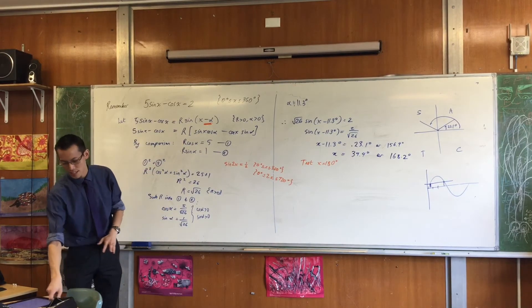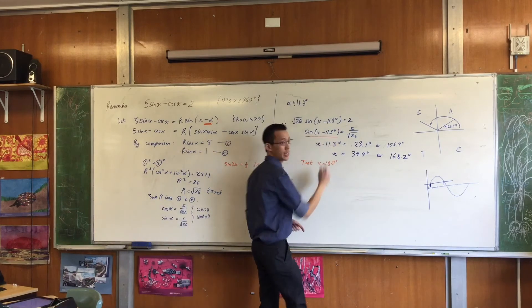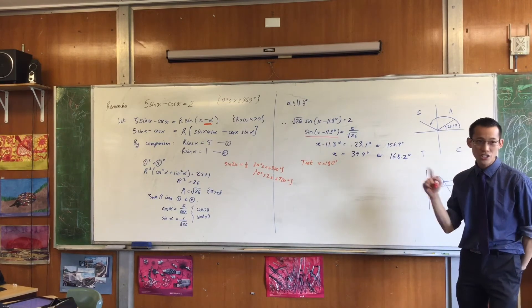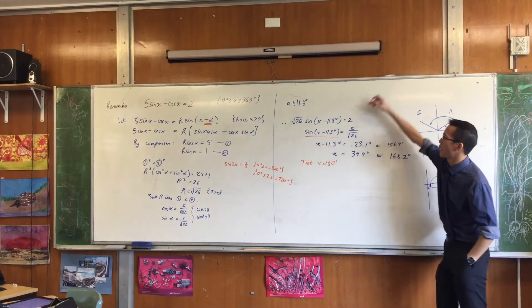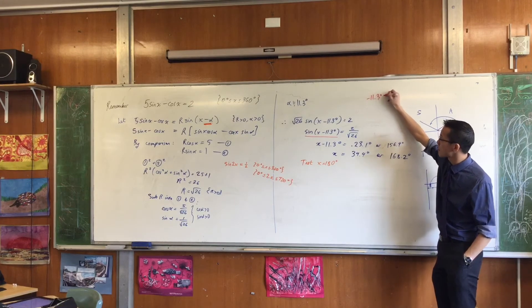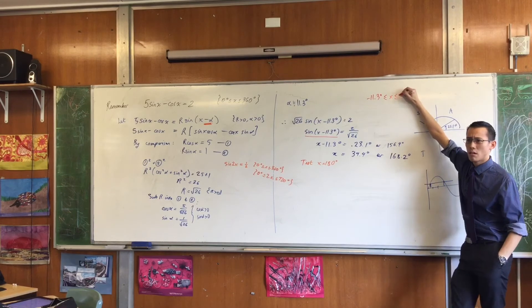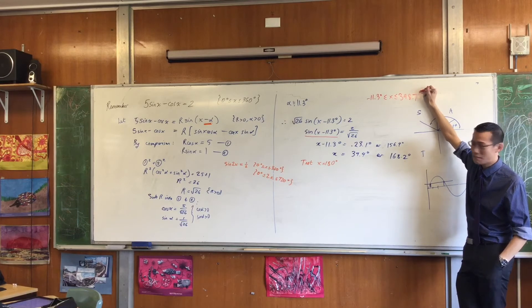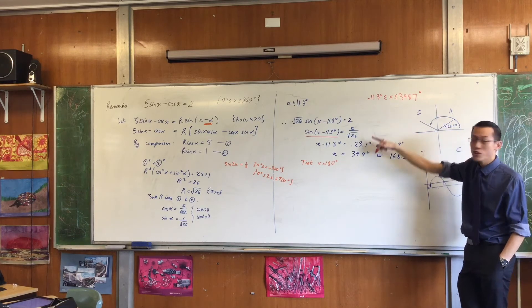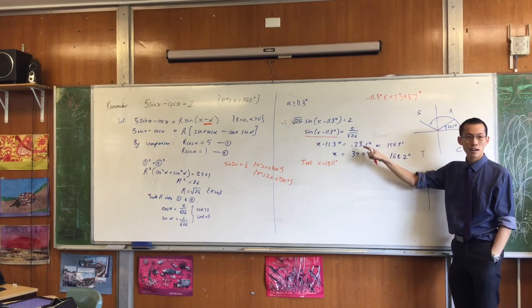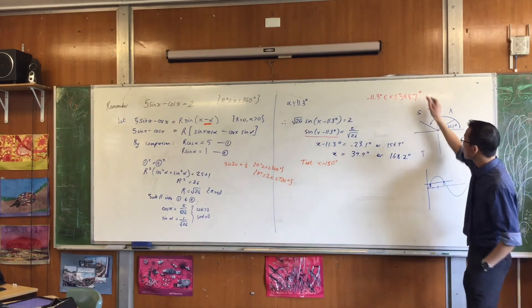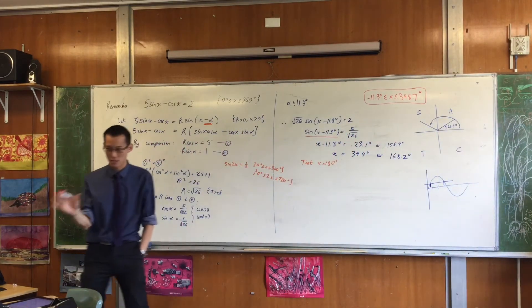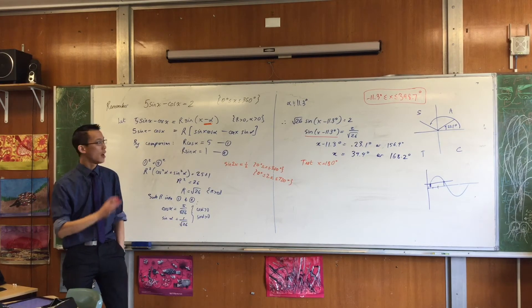Now the phase introduces this issue, right? I'm no longer really solving from 0 to 360. I'm actually solving from -11.3 degrees to 348.7 degrees. So when you go and find your solutions, see these guys here, you're not thinking about, are they between 0 and 360? You actually have to think, are they between here and here? Now, I chose this example specifically because I didn't want to confuse you too much. This is fine. Those are solutions, okay?